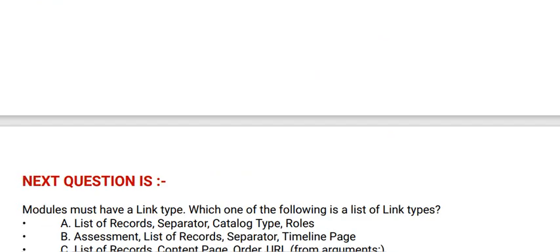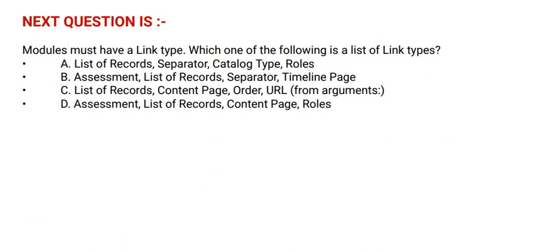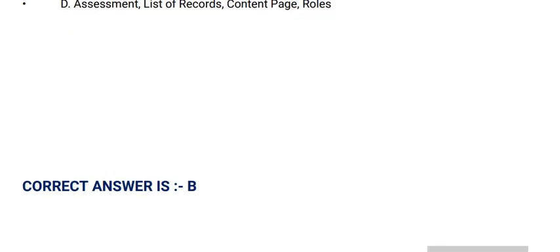Next question is: modules must have a link type. Which one of the following is a list of link types? Option A: list of records, separator, catalog type, roles. Option B: assessment, list of records, separator, timeline page. Option C: list of records, content page, order, URL. And the correct answer is option B.